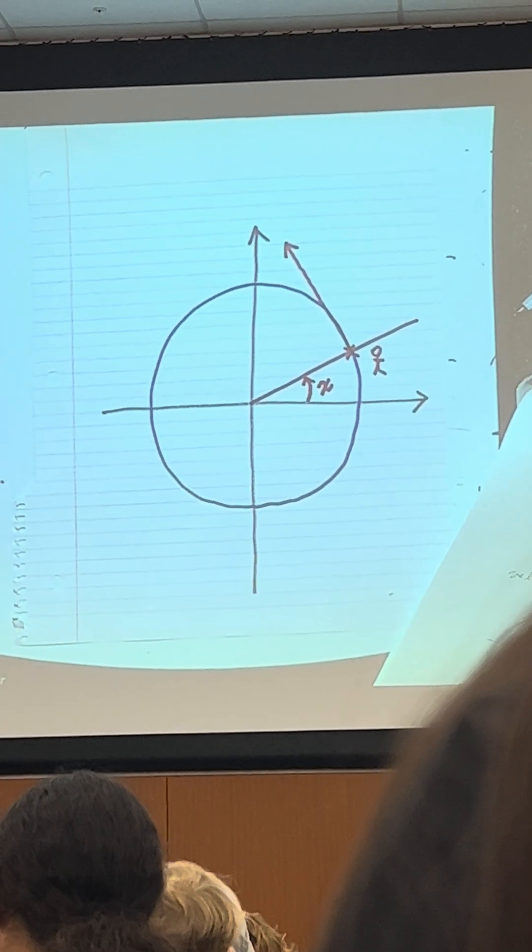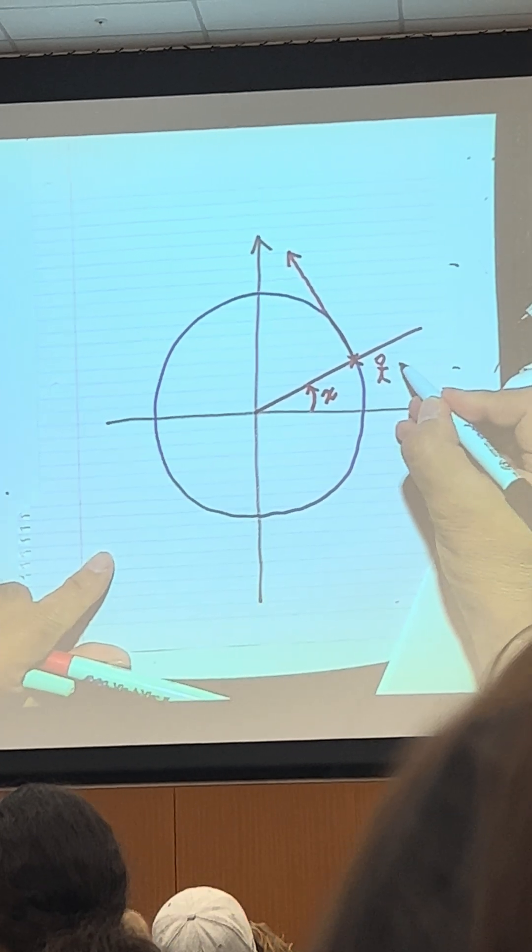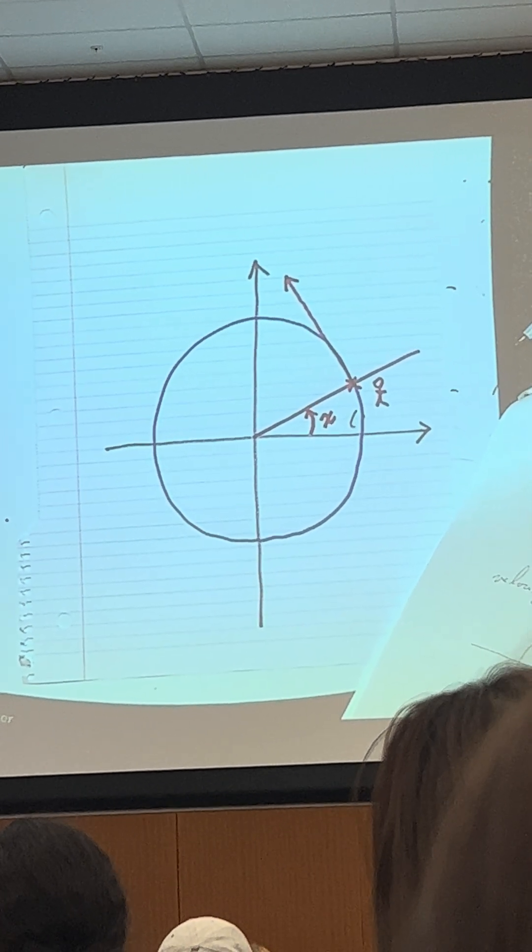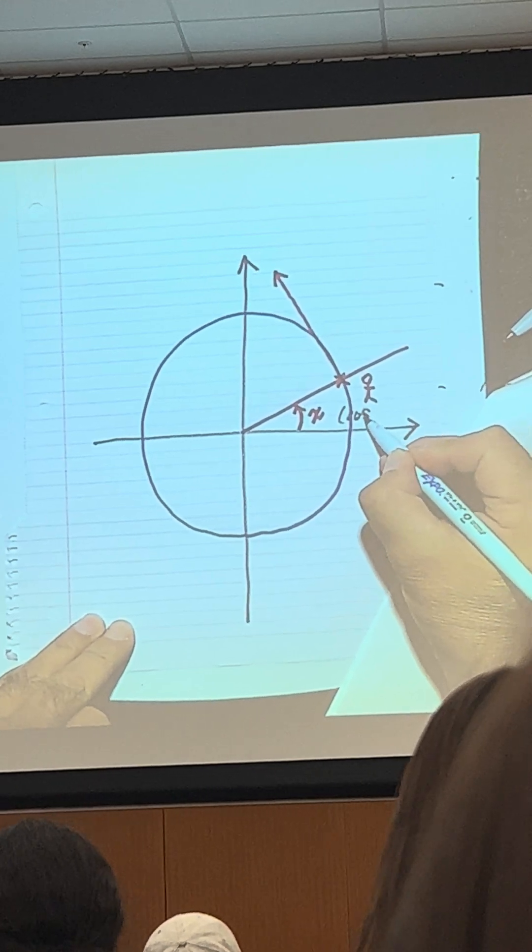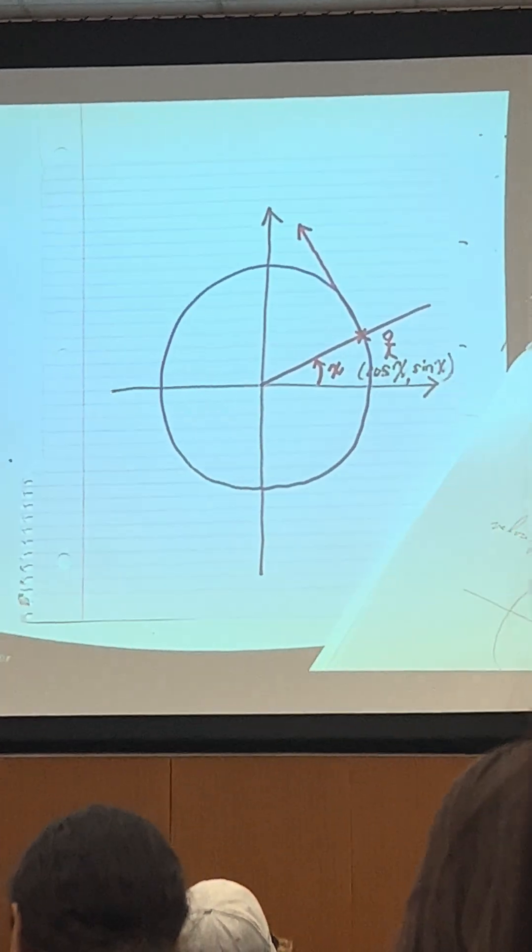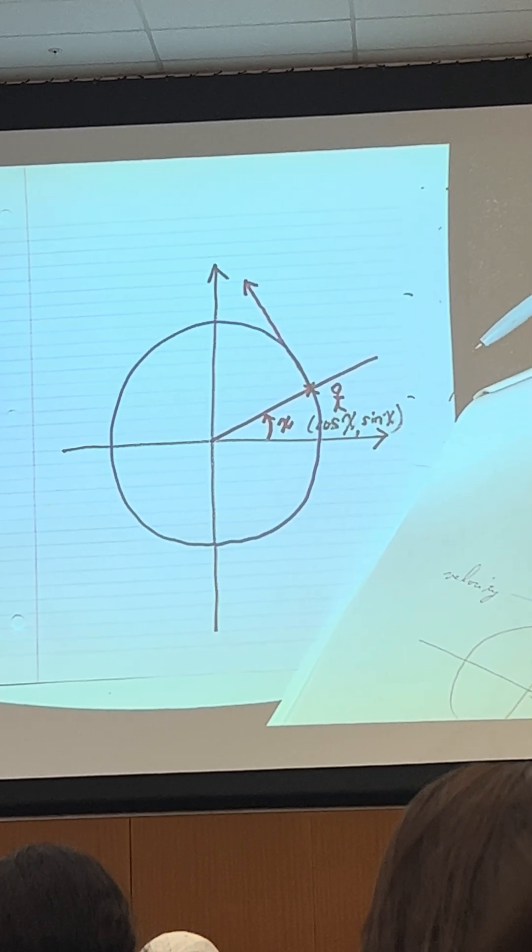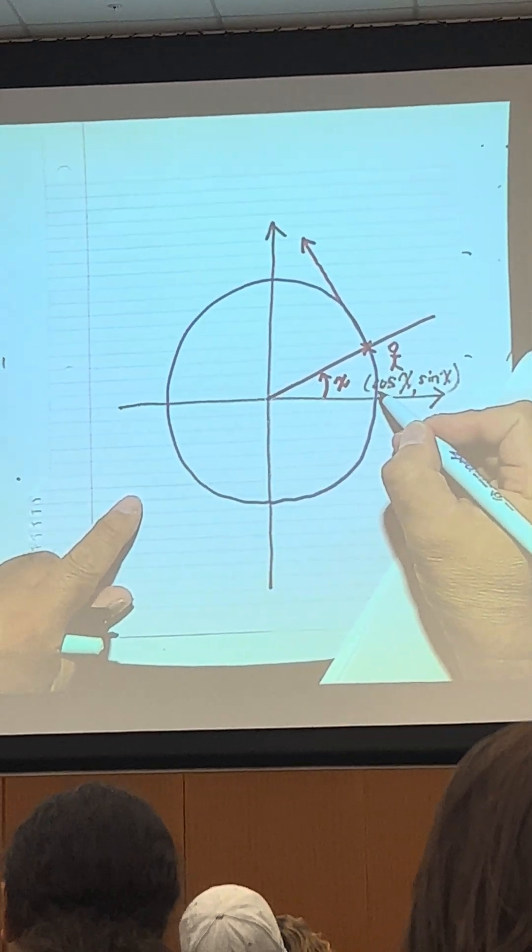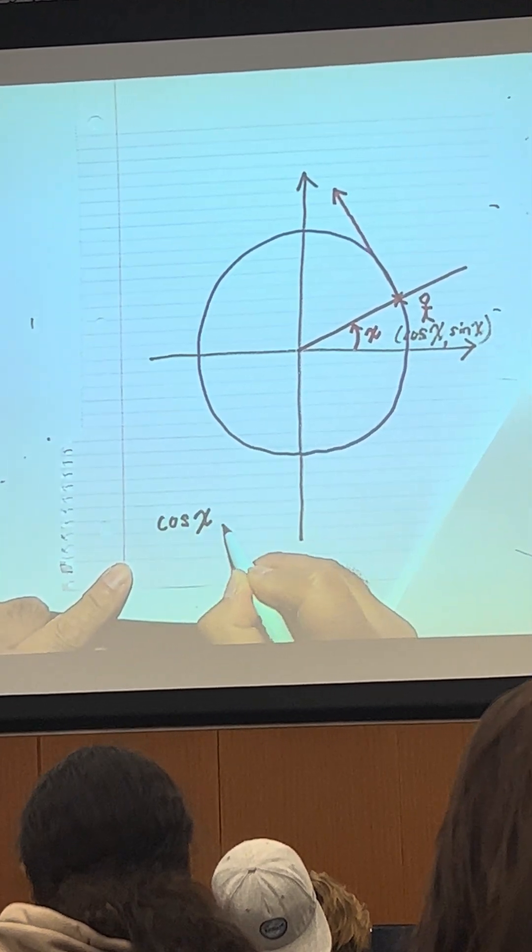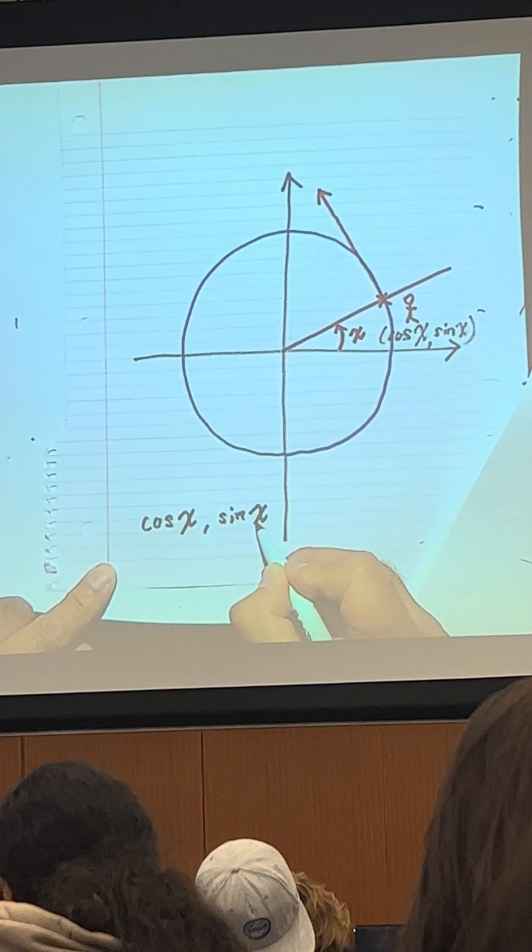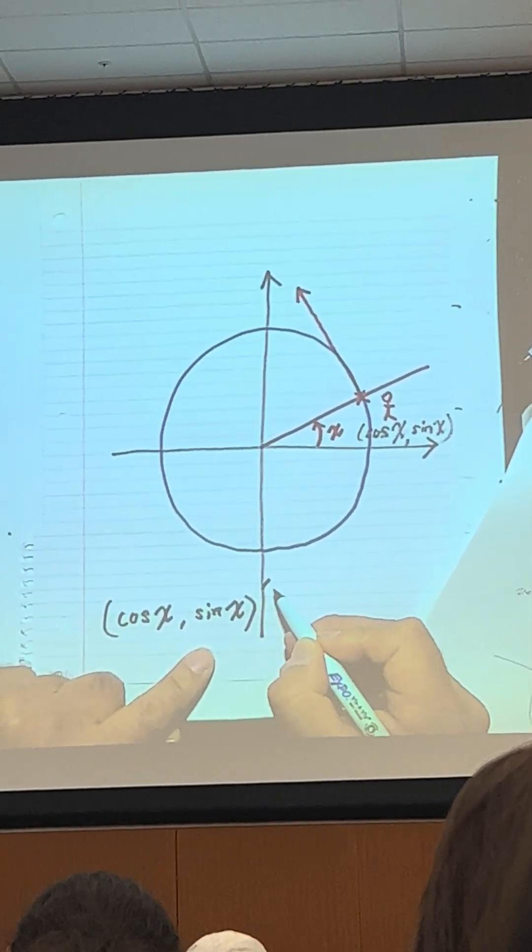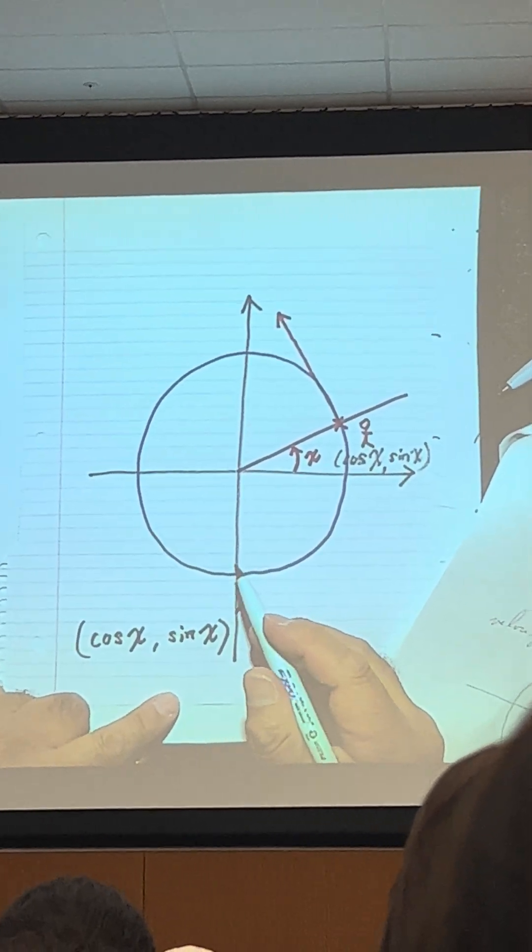So here comes the punchline. What is the punchline? Here's the little u. Little u has the coordinate of cosine x and sine x, no? Do you see it? Cosine x and sine x. Are you with me? And you're computing the velocity. So what is the velocity? Cosine x, sine x is your coordinate. Velocity, you are going to take derivative.